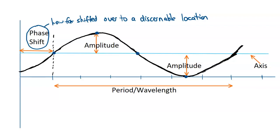You might think there's a minimum right here, but it's not — the graph actually continues to go way down further. We can't tell from what's graphed, so we have to shift it over to a discernible location as shown. That's the phase shift.